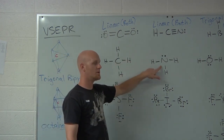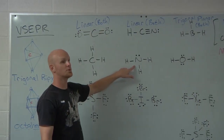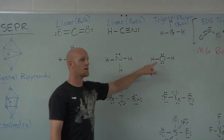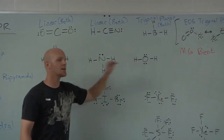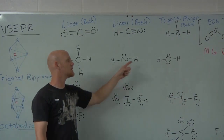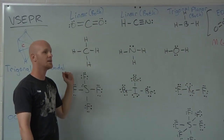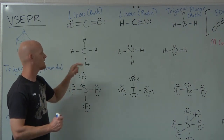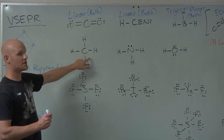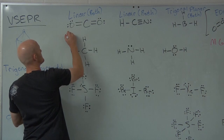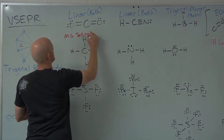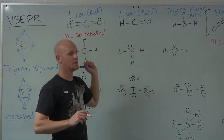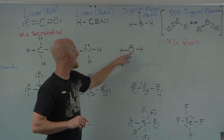Ammonia (NH3) has four electron domains, and water (H2O) also has four electron domains. All three molecules — the four-domain example, ammonia, and water — have the same electron domain geometry: tetrahedral. However, molecular geometry is different. The first molecule (with all bonding domains) has a molecular geometry also called tetrahedral, but ammonia and water do not.